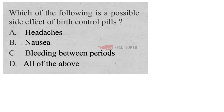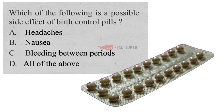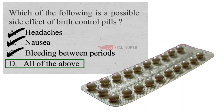Which of the following is a possible side effect of birth control pills? A. Headaches, B. Nausea, C. Bleeding between periods, D. All of the above. And the correct answer is D. All of the above. Headaches, nausea and bleeding between periods are all side effects of birth control pills.